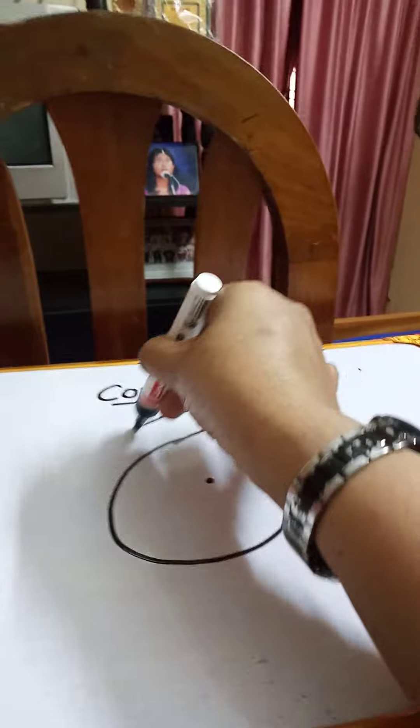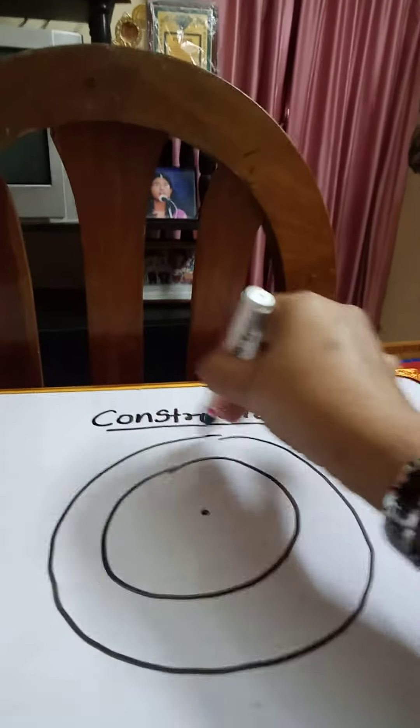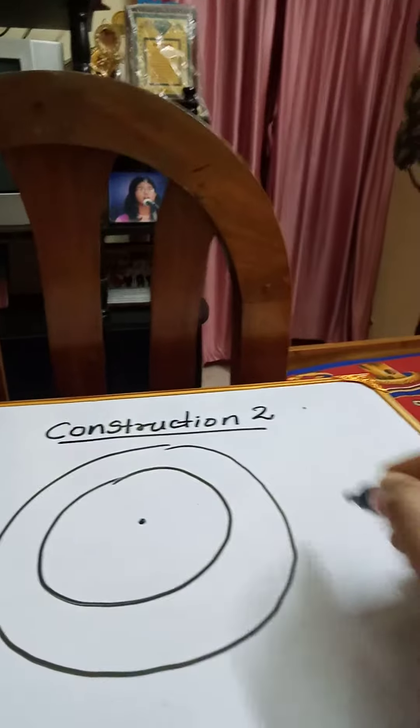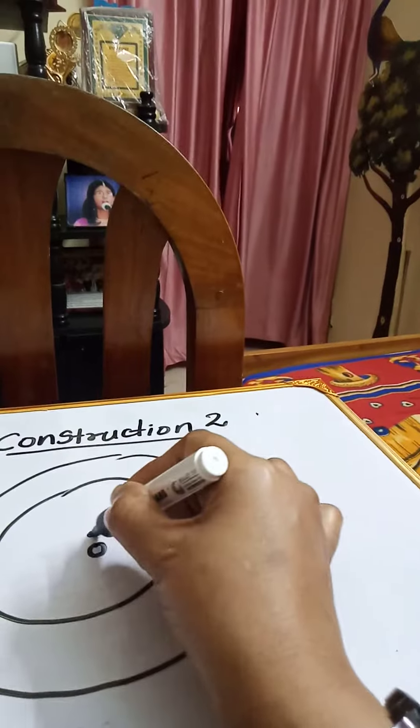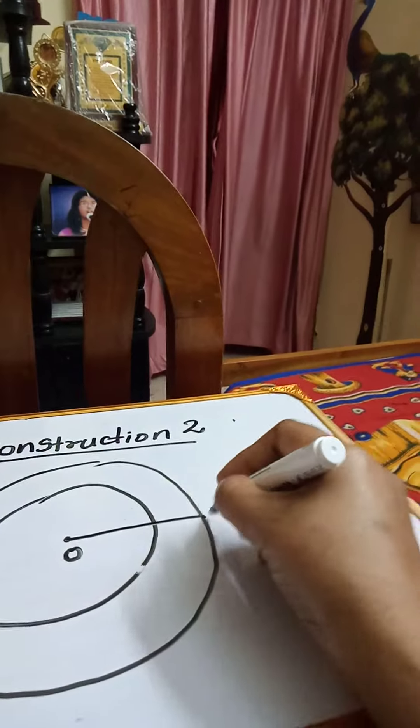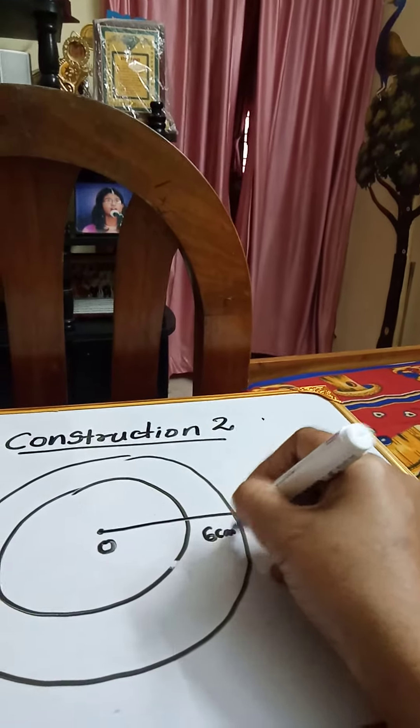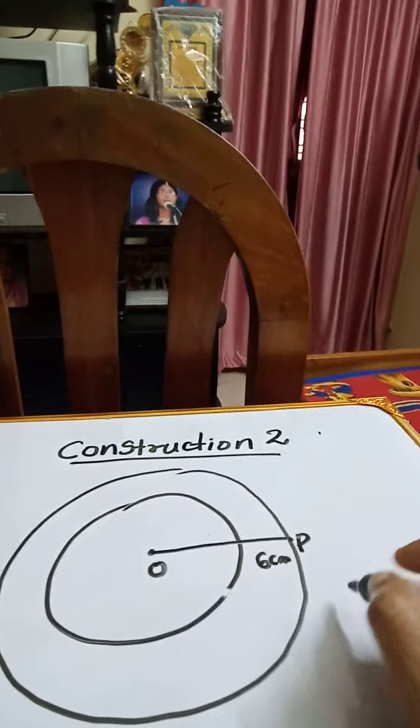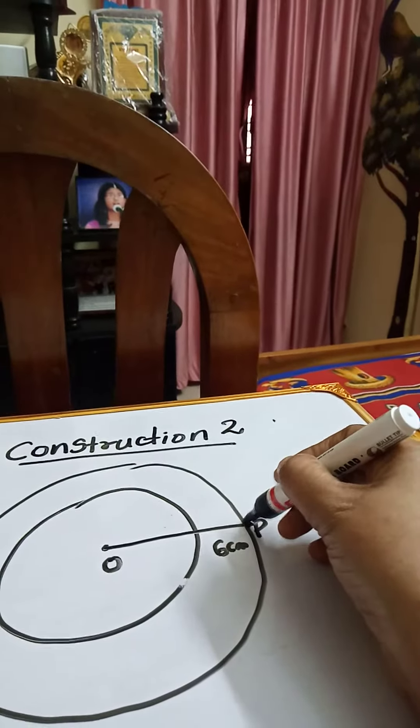Both are concentric. Center is O and the biggest circle with radius is 6 centimeter. So I am taking this is 6 centimeter. Now I am taking P as the external point of the first circle.